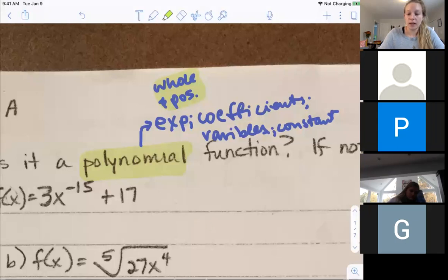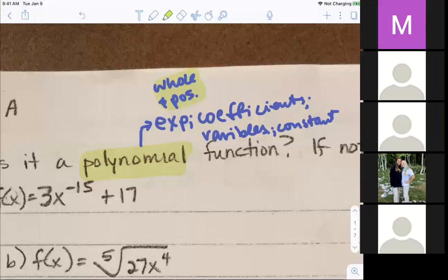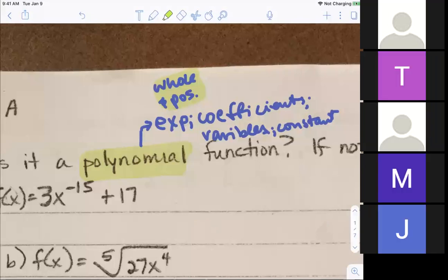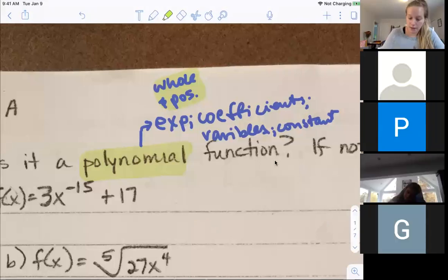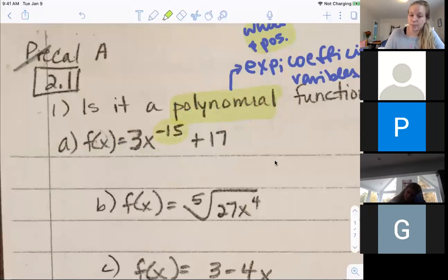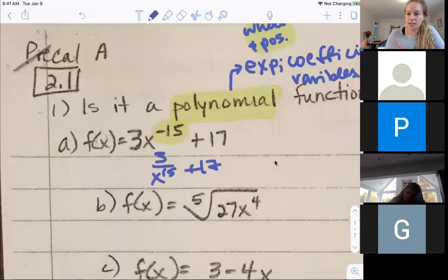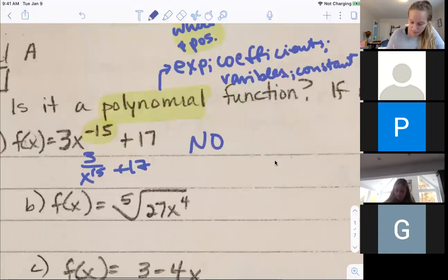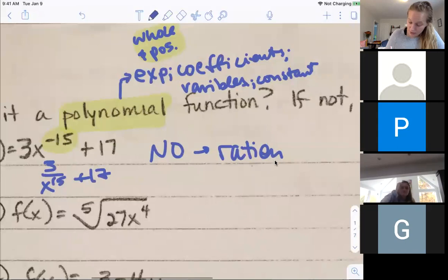We've got a few examples here and we're just going to identify if they are polynomial functions or not. The first one, since it has a negative exponent, it's not. If it has a negative exponent, technically it's 3 over x to the 15th plus 17. And if you have your x in the denominator, that's what we call a rational function.